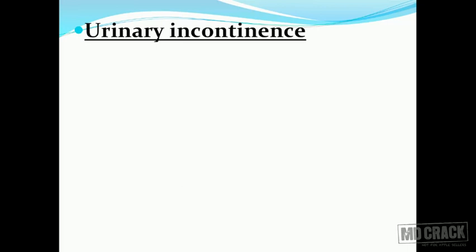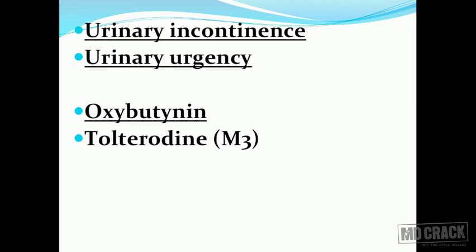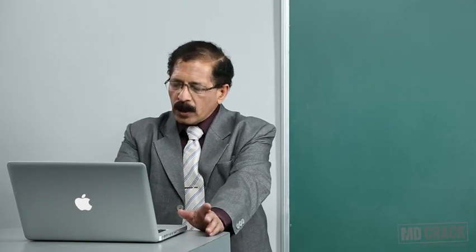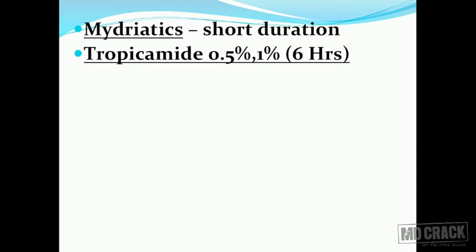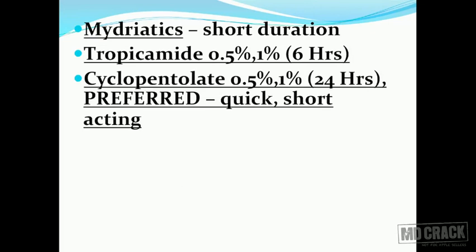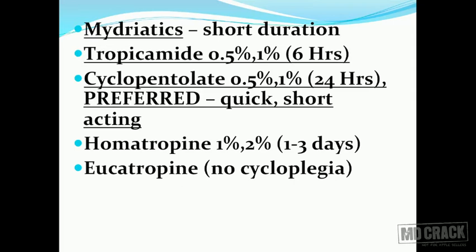The next group is the drugs used for urinary incontinence. The atropine substitutes useful to manage urinary incontinence and urinary urgency include two important drugs: oxybutynin and tolterodine. Tolterodine is more selective at the M3 receptors. You also have propiverine, which can be used to treat urinary incontinence or urinary urgency. Regarding the iris, the circular muscle is under parasympathetic cholinergic control while the radial muscle of the iris is under sympathetic control, and both work together in the eye.